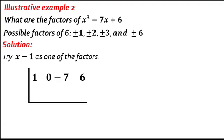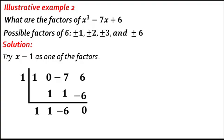Identify the value of c from x minus 1: c is 1. Bring down the first coefficient, 1. Then: 1 times 1 equals 1; 0 plus 1 equals 1; 1 times 1 equals 1; negative 7 plus 1 equals negative 6; negative 6 times 1 equals negative 6; 6 minus 6 equals 0. The remainder is 0, so x minus 1 is one of the factors of x cubed minus 7x plus 6.